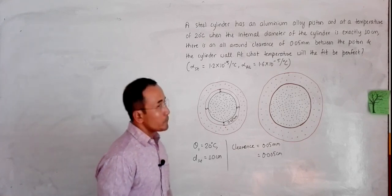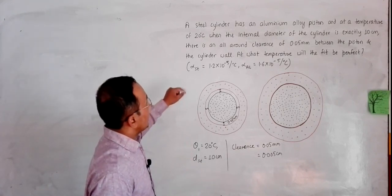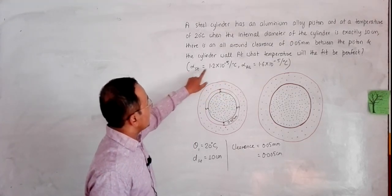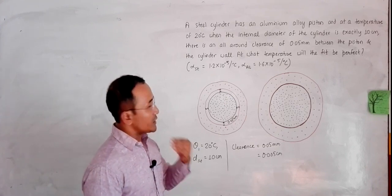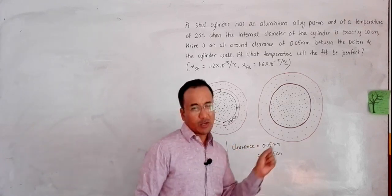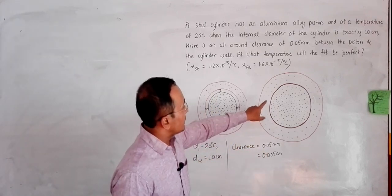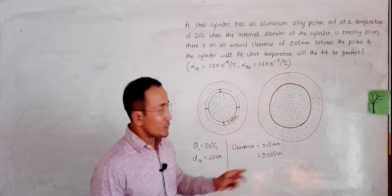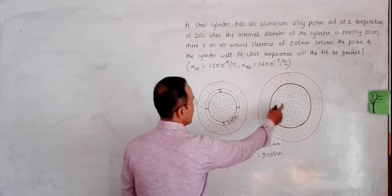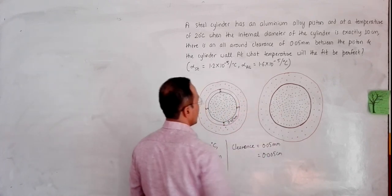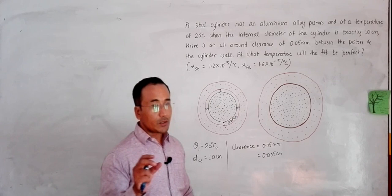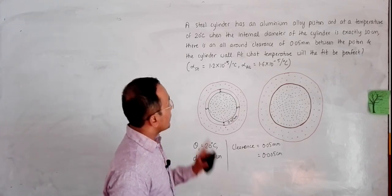When the temperature increases, the expansivity of aluminum is higher than that of steel, so aluminum expands more. As we heat the system, there is a certain temperature θ₂ where the piston and cylinder fit exactly. This diagram shows that exact fitting condition — the aluminum has expanded more than the steel ring, producing a perfect fit.